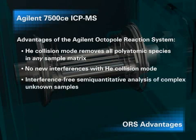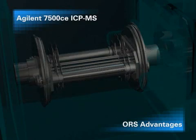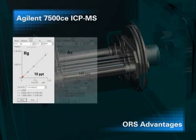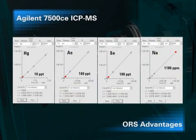Helium collision mode enables rapid and accurate semi-quantitative analysis. More than 60 elements can be measured in a completely unknown sample in approximately one minute, without the need to run calibration standards. The 7500 CE can measure mercury at single figure parts per trillion, plus sodium at greater than 1,000 parts per million in the same analytical run. The calibration graphs show excellent linearity for mercury down to 10 parts per trillion, arsenic and selenium down to 100 parts per trillion, and sodium at 1,180 parts per million — all achieved in the same run. This clearly demonstrates the power of the ORS.